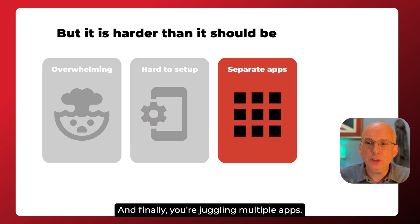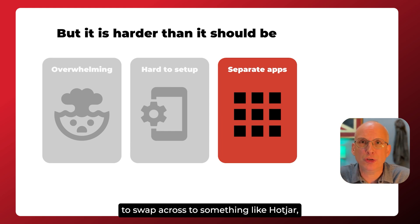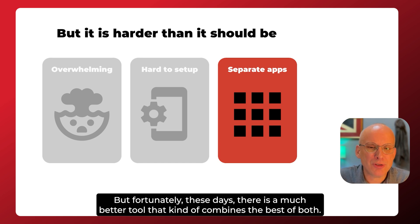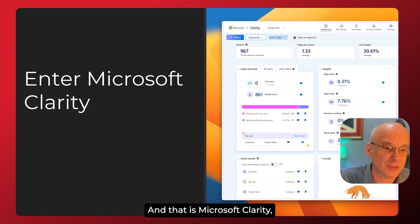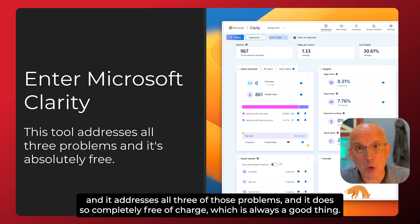And finally, you're juggling multiple apps. You're using Google Analytics for your more dense analytics stuff, and then you're having to swap across to something like Hotjar if you want insights like session recording, heat maps, that kind of thing. But fortunately, these days there is a much better tool that combines the best of both. It doesn't do everything that both do, but it certainly combines the essence of both. And that is Microsoft Clarity, and it addresses all three of those problems completely free of charge.